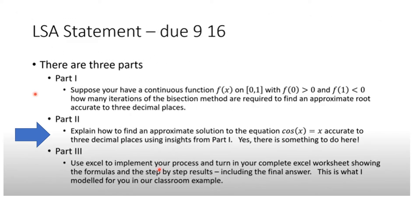Now, Part 2 asks us to explain how to find an approximate solution to the equation cos(x) = x accurate to three decimal places using insights from Part 1. And yes, there was something to do here. Let's talk about that.